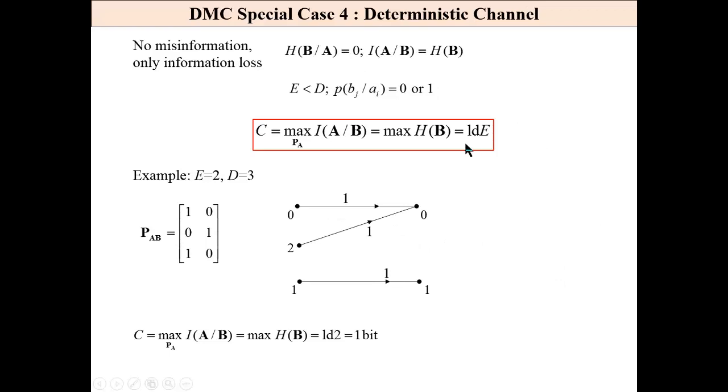Deterministic channel. For such channel, we have only information loss. We don't have misinformation. For example, we have 3 inputs, but only 2 outputs. And this is deterministic channel. If 0, then 0 for sure. If 2, then also 0 for sure. If 1, then 1. For this exemplary channel, we have 1 bit of information. It is channel capacity.